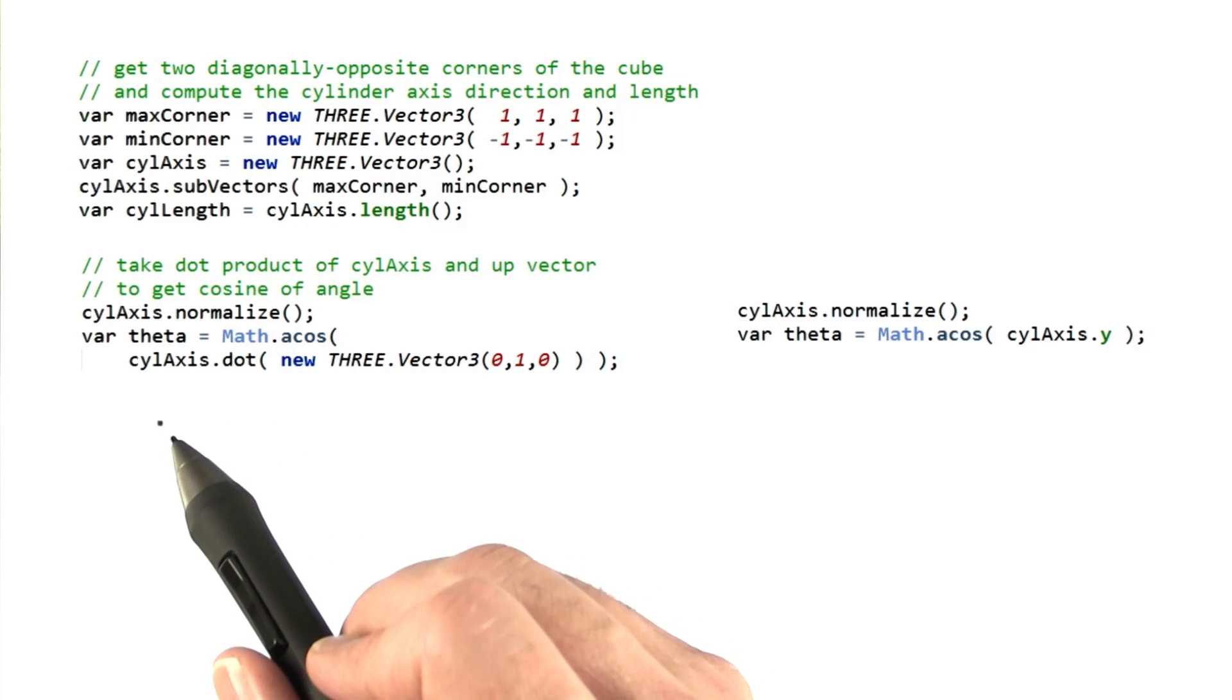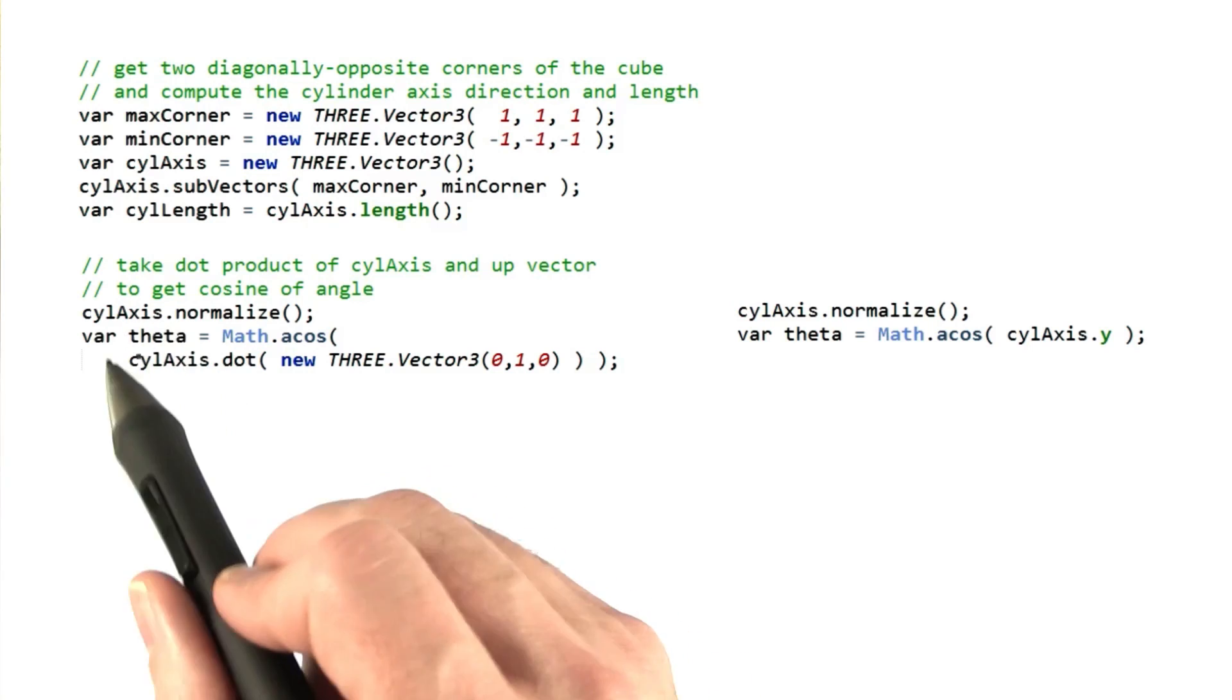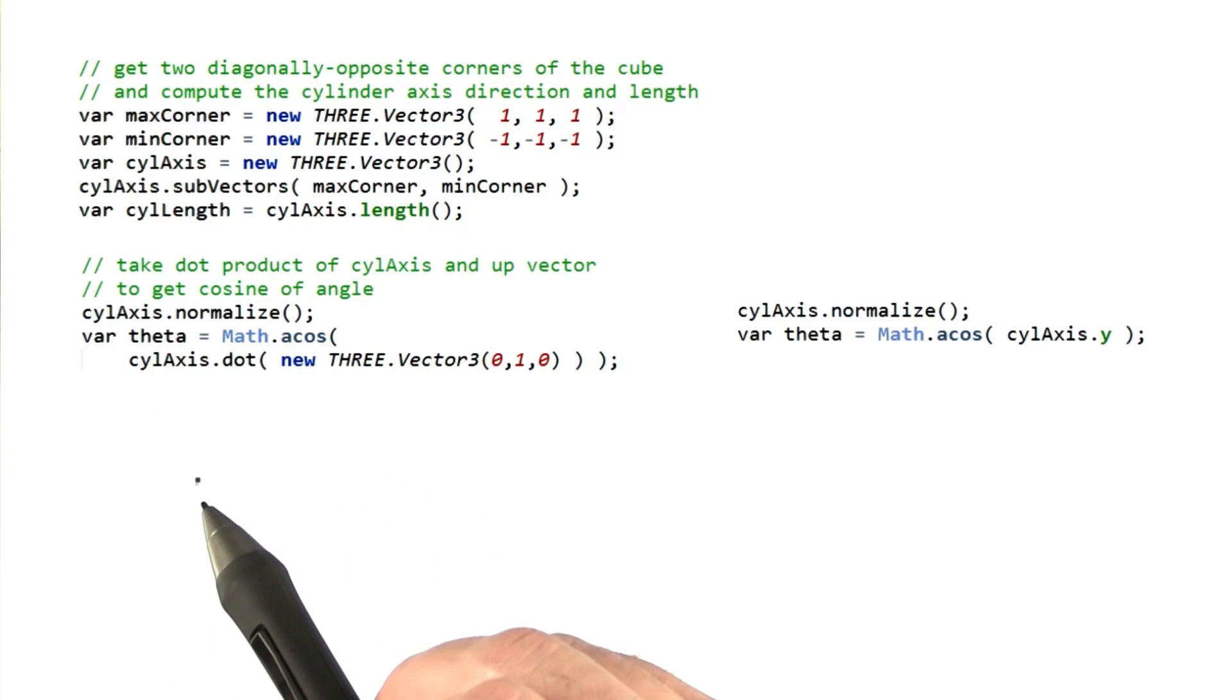Now we have all the facts we need to make this object. The axis and angle of rotation and the length of the cylinder. So let's get cracking. Well, I guess I should mention that the sign of the theta might be a little bit questionable here. We could use the right hand rule to make sure we have the direction of rotation right.